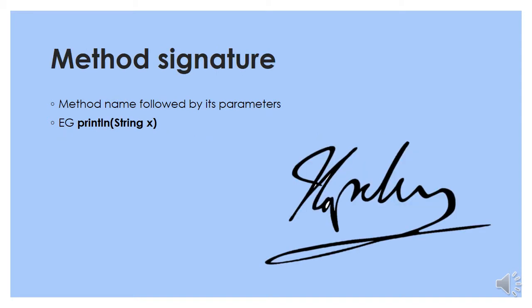A method signature is just the method name followed by its parameters. For example, the println method: println(String x).